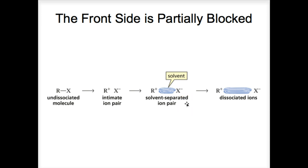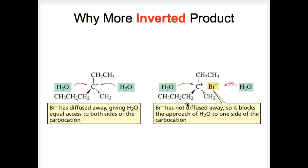So more of the product with the inverted configuration will be formed. This is also illustrated on the next slide. Here's our bromine has diffused away and we're left with the cation, the carbocation, giving water, the nucleophile, equal access to both sides of the carbocation. That would be in a fully dissociated pair of ions. Over here on the right, the bromine leaving group has not diffused away. There it is. So it blocks the approach of water to one side of the carbocation, resulting more in the inverted product occurring because it can't form the other product because it's blocked from this side.